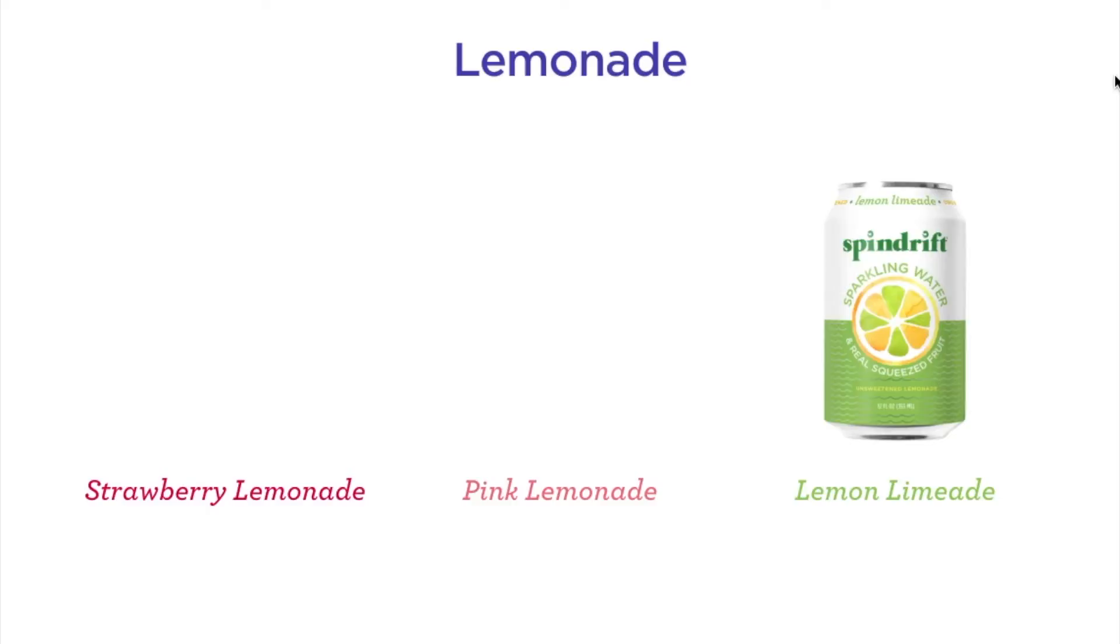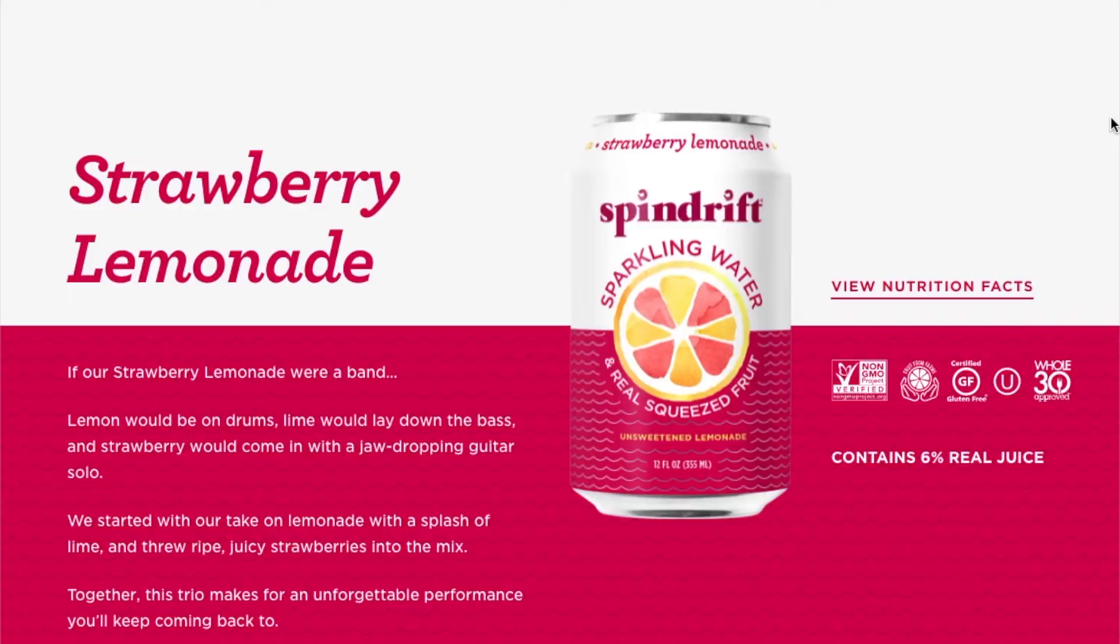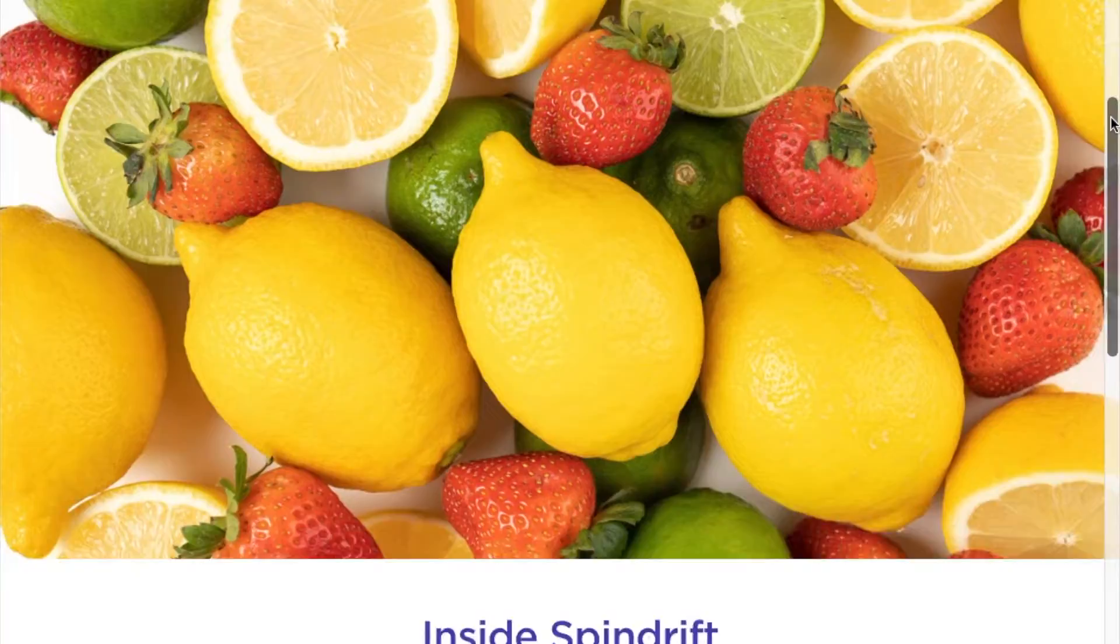So what are the pros? I already mentioned some, but there's a ton of pros with Spindrift Sparkling Water. First, it only contains two or three ingredients depending on the flavor, which are carbonated water and real actual fresh squeezed fruit juice. The fruit used in Spindrift is ripe and at its peak, and that's clear in its taste.